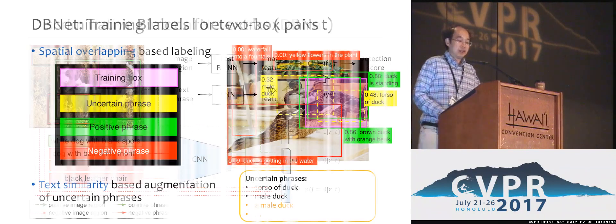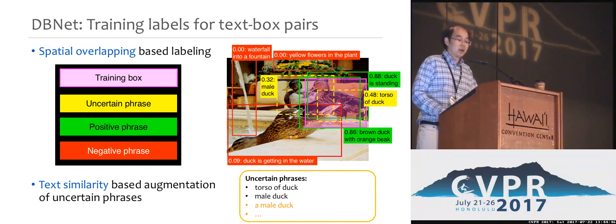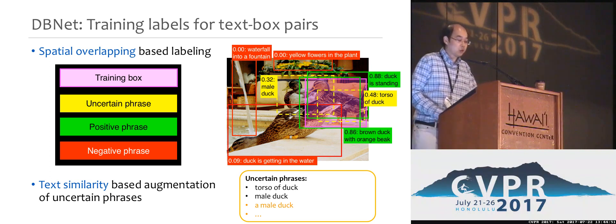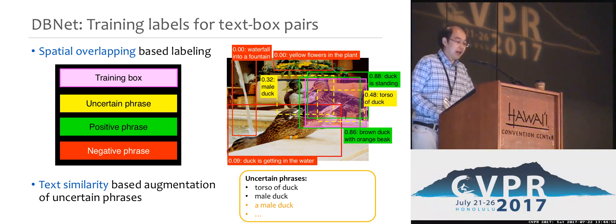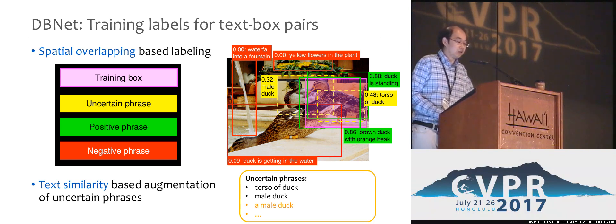In the DBNET training, we consider any possible combination of boxes and text phrases. On the other hand, we also try to guarantee the correctness of the training labels as much as possible. To this end, we rule out text-box pairs with potential uncertain labels based on the spatial overlapping with ground truth boxes, and based on the text similarity between phrases.